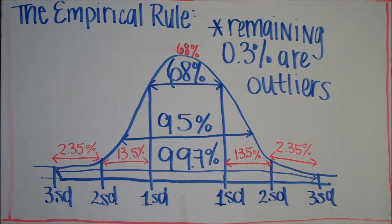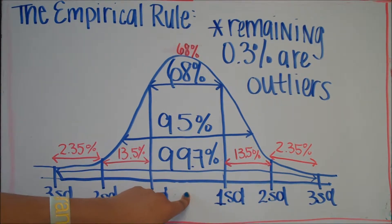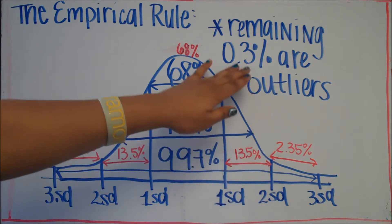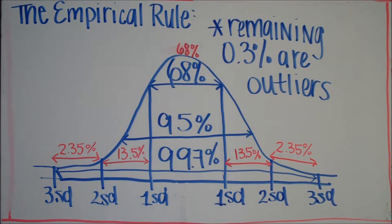between two standard deviations of the mean. And finally, 99.7% should be within three standard deviations of the mean. Anything beyond these three standard deviations, or 0.3%, are considered outliers.